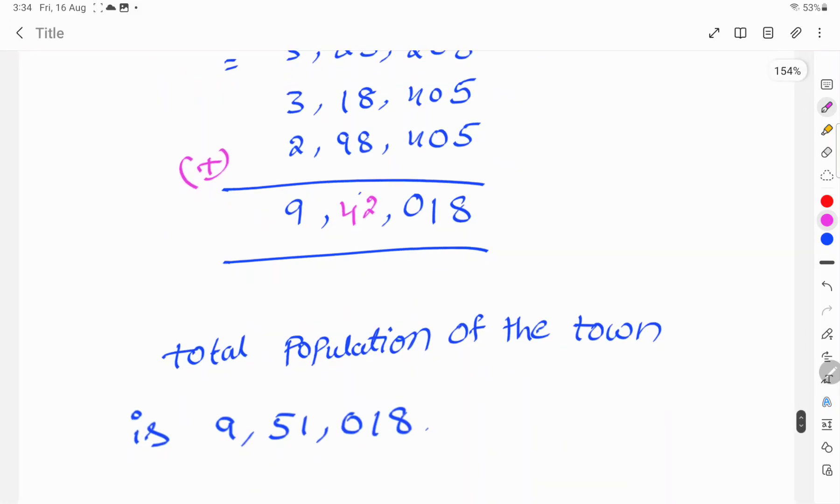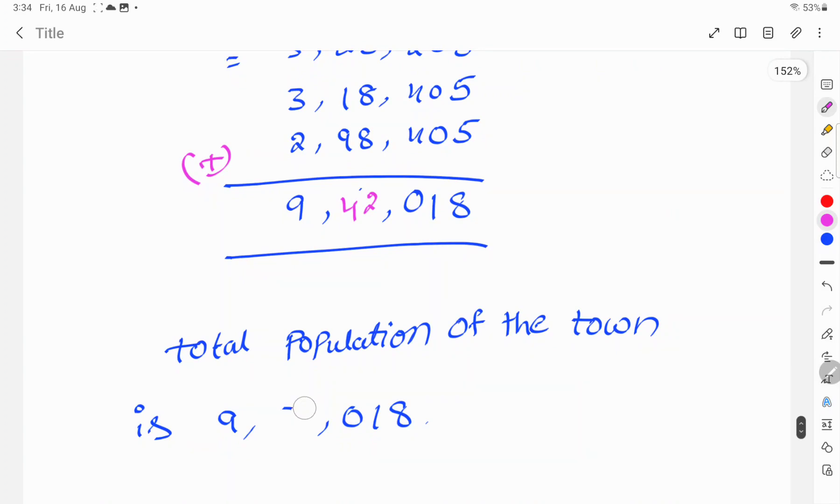So, the total population in the town is 9,42,018. This is the solution.